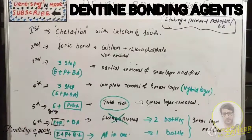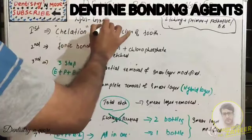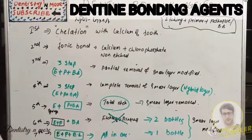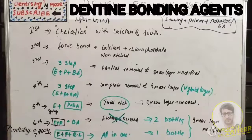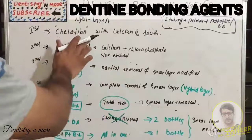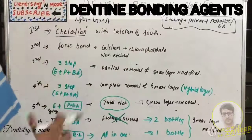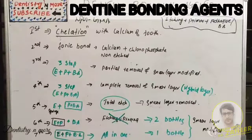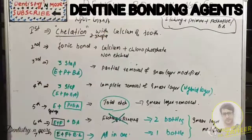The first generation was based on NPG-GMA, a surface-active comonomer, which was the first commercially available dentin bonding agent. Theoretically, NPG-GMA was supposed to chelate with calcium in dentin to form a water-resistant chemical bond - the first attempt to bond to dentin by chelation using calcium ions. However, bond strength was very low, around 2-3 MPa, and clinically this agent did not successfully bond composite to dentin.